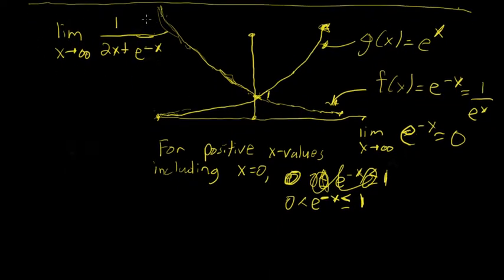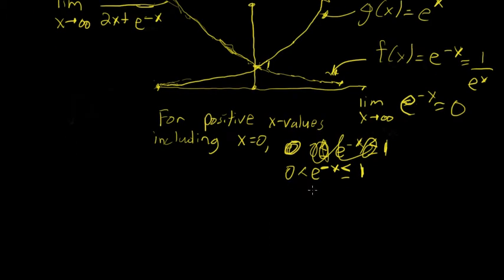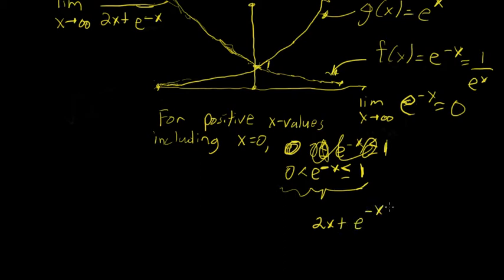The limit we're concerned with here is the limit as x approaches positive infinity, so we're really only concerned with positive values of x and these values of e to the minus x. So if e to the minus x ranges between 0 and positive 1 — excluding 0 and including 1 — then 2x plus e to the minus x is going to range between 2x and 1 plus 2x. We're just adding 2x to every portion of this compound inequality.